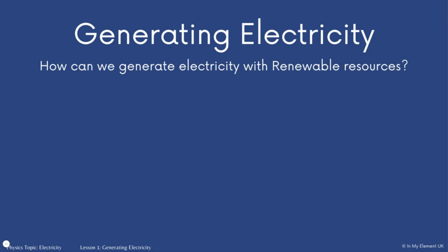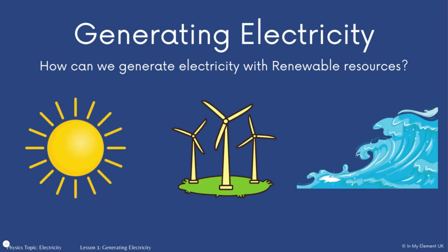The other way to generate electricity is using renewable energy resources. We have three images: sunlight, wind turbines, and waves. Sunlight is used on solar panels — the solar panels absorb the light and generate electricity depending on the type of panel. Wind turbines use wind to turn the turbines, and turning a turbine generates electricity. Waves can also drive generators to generate electricity.